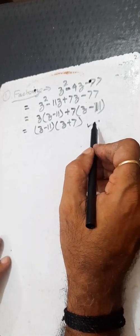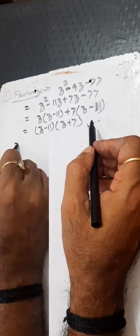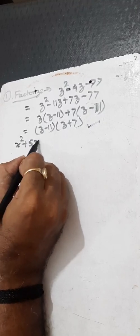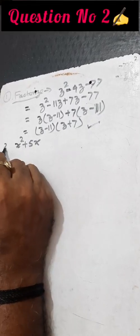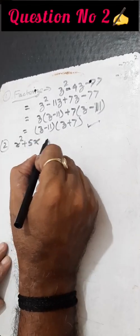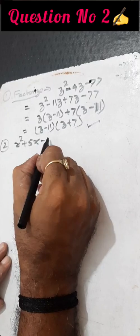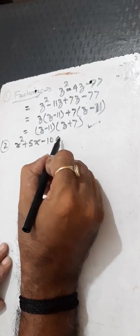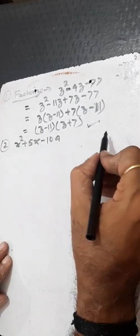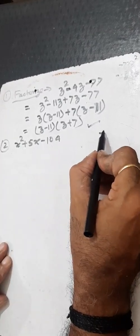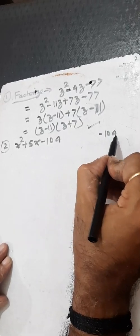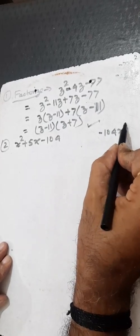Now, factorize the second question: x squared plus 5x minus 104. Extreme multiplication is minus 104 times x squared, which gives minus 104x squared. This is split into two parts.